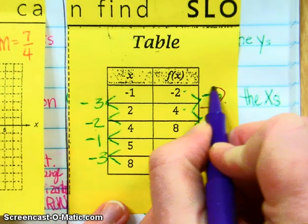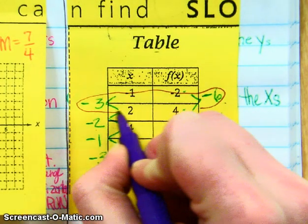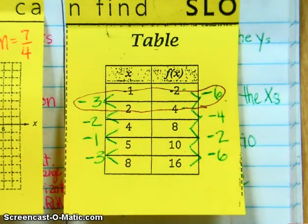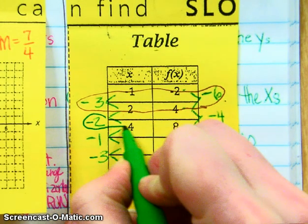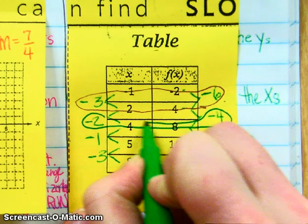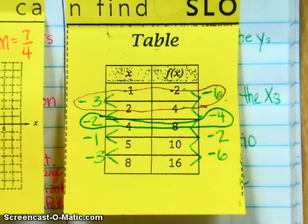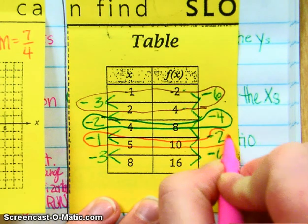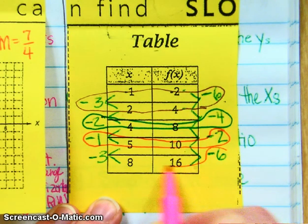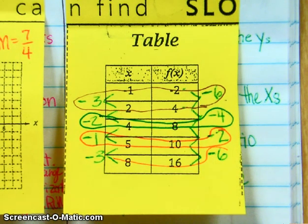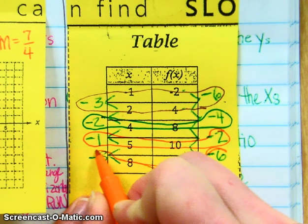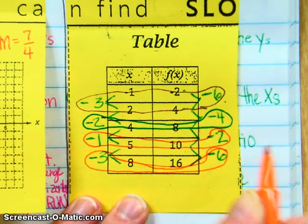This y change goes with this x change. These two go together. Here's the vertical change, here's the horizontal change. Change in the y, oops, I'm supposed to change my colors, sorry about that. Change in the y over the change in the x.